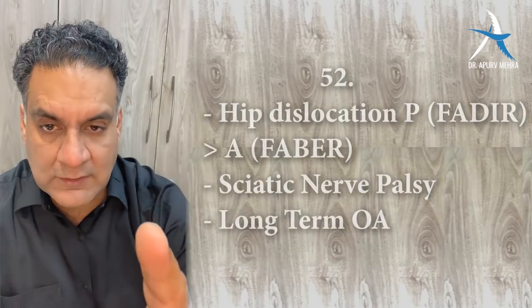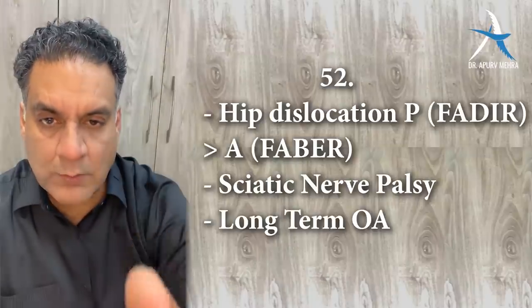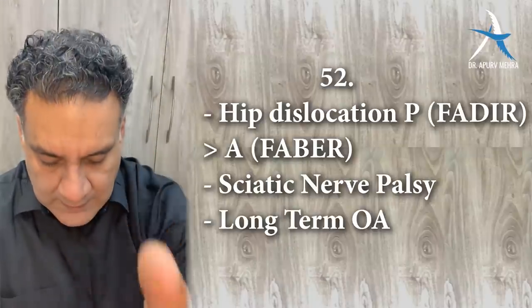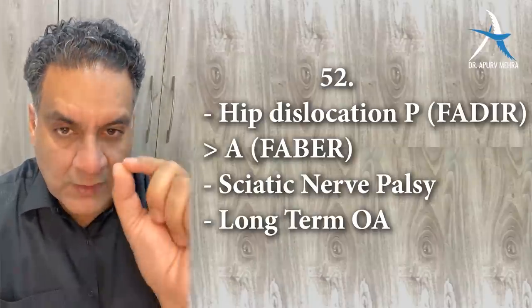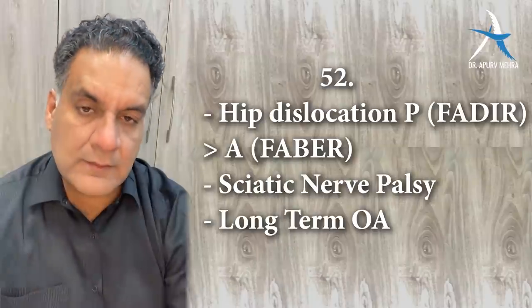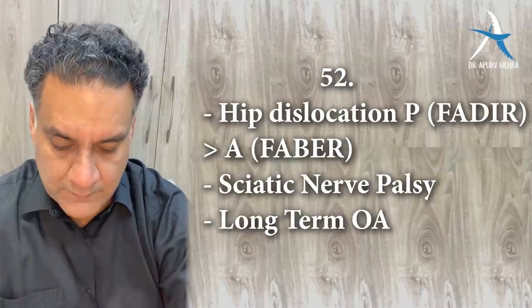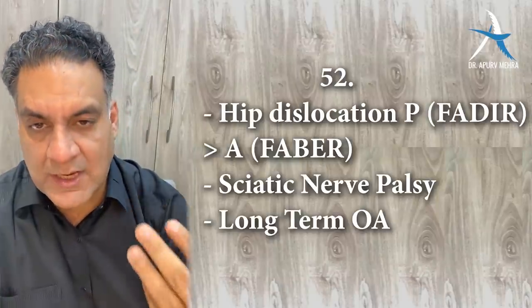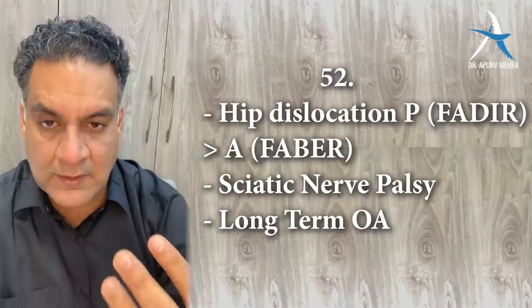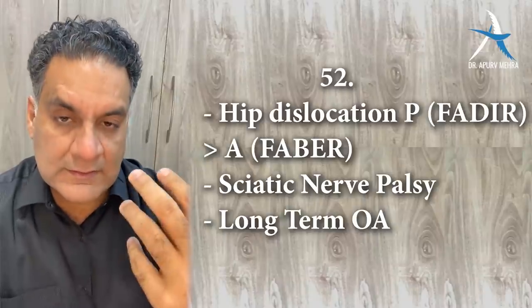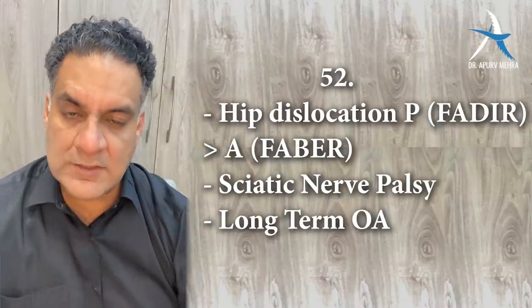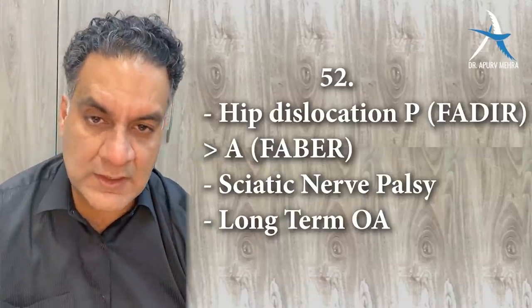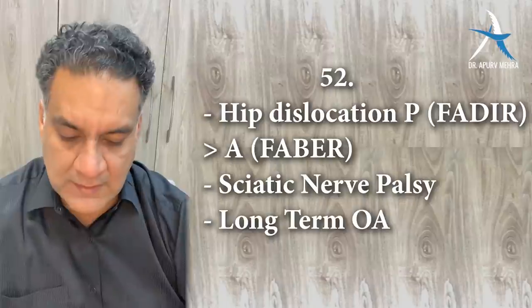Point number fifty-two: hip dislocation — posterior more than anterior. FARDIR for posterior, FABER for anterior. The sciatic nerve is the most commonly involved nerve in the early complication of posterior dislocation. The long-term complication is arthritis of the hip.